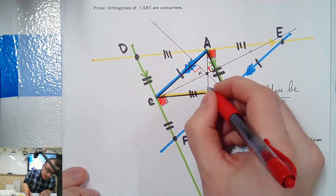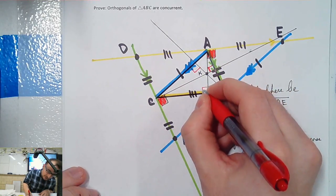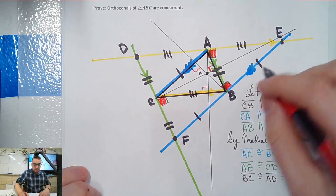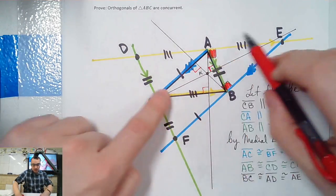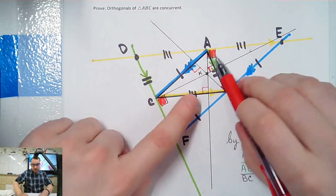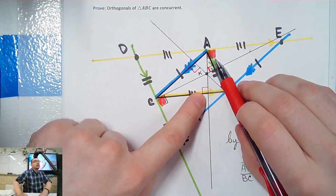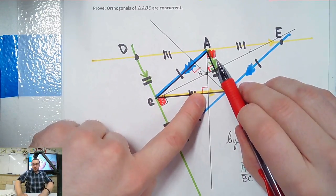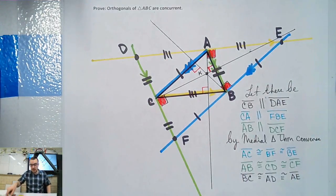We shouldn't be surprised — they can all go through K. That's allowed. We proved earlier that they're always going to go through K; the perpendicular bisectors all intersect at one point. So now I've got this, which means this is 90 — two parallels, transversal, alternate interior. So how do I write all that? I need some letters.